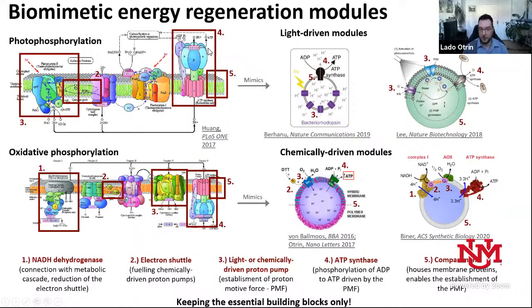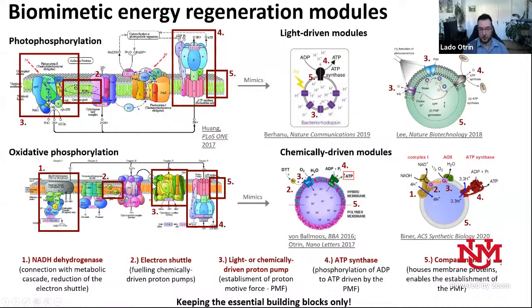What is required to mimic these functions? It's actually pretty simple — you can reduce the number of components to the essential ones. We need a membrane from which we can form vesicles, which enable the formation of a gradient, which can then drive ATP synthesis by ATP synthase. How this gradient is formed is more versatile: you need a proton pump — chemically driven for oxidative phosphorylation, or light-driven for light-based systems — plus electron shuttles and an enzyme connecting to metabolism.